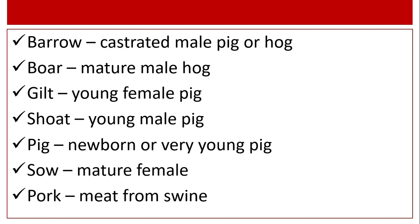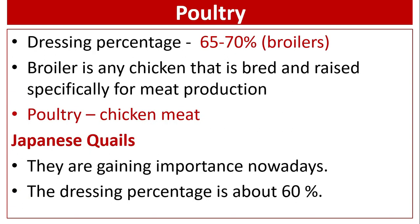Pig terminology: castrated male pig or hog is known as barrow; mature male hog is known as boar; young female pig is known as gilt; young male pig is known as shoat; newborn or very young pig is known as piglet; mature female is known as sow. Meat from swine is known as pork.